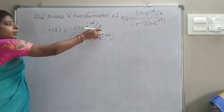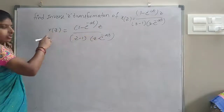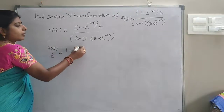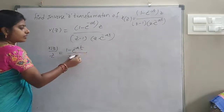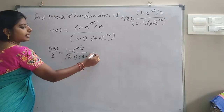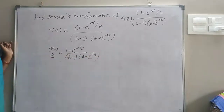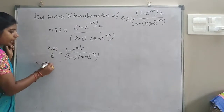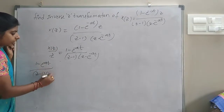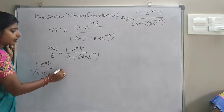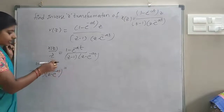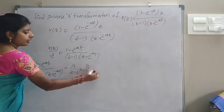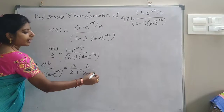So, we multiply Z in the numerator. Now we divide both sides by Z. Therefore, S(Z)/Z equals (1 minus e^(-AT)) divided by (Z minus 1) into (Z minus e^(-AT)). Now we apply partial fractions. The partial fraction form is A/(Z minus 1) plus B/(Z minus e^(-AT)).